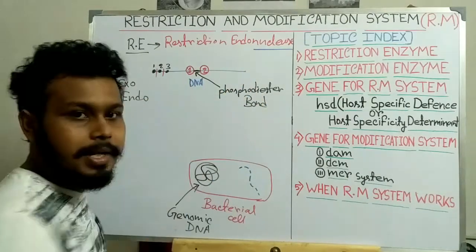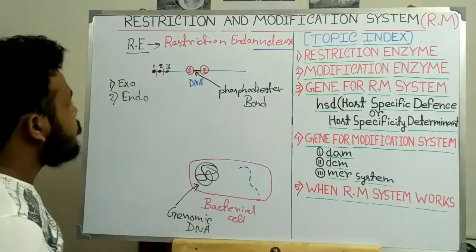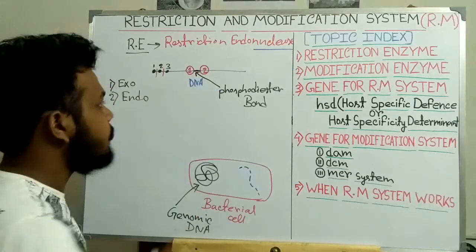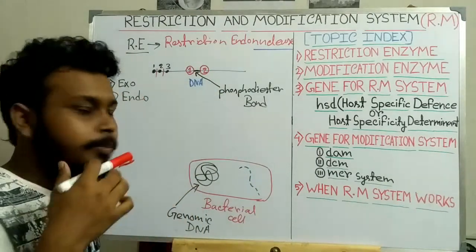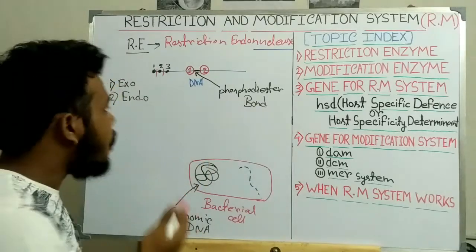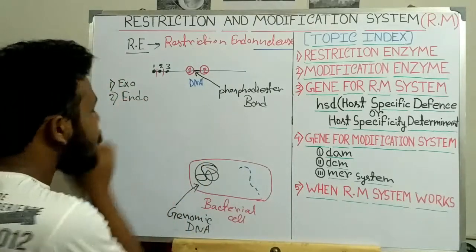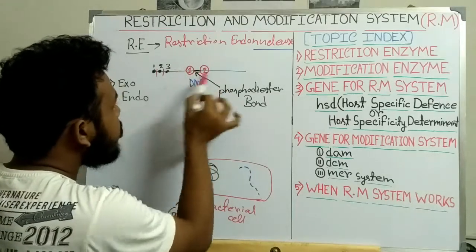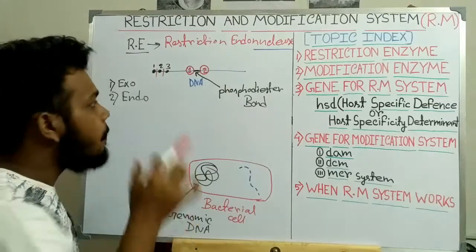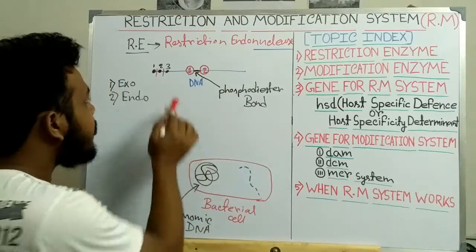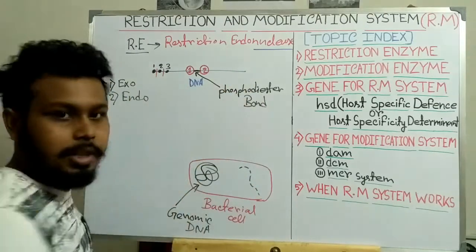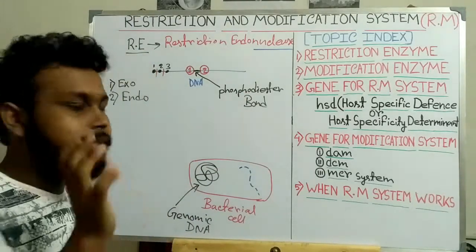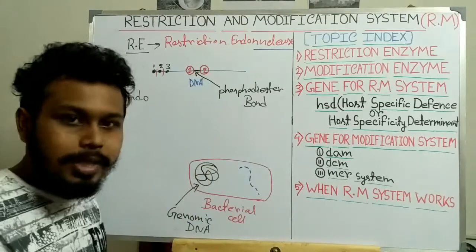Now, what is the endonuclease enzyme? The endonuclease enzyme is the opposite of the exonuclease — it can cut the DNA at any internal position in the middle of the DNA, but it cannot cut the DNA from the end position. The restriction enzyme is one type of endonuclease enzyme.